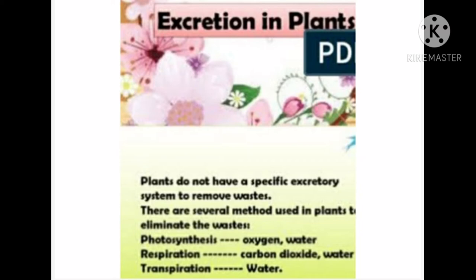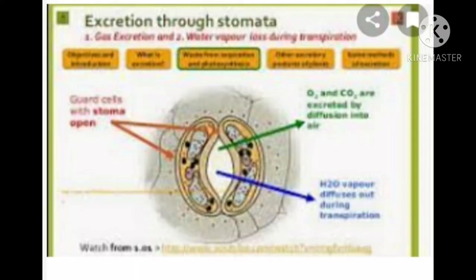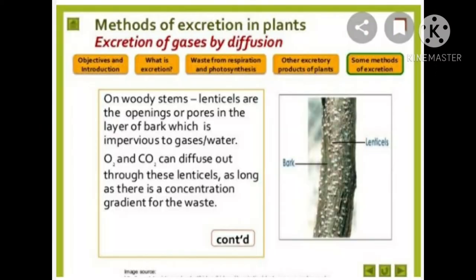During photosynthesis and respiration, carbon dioxide, oxygen, and water are produced as additional materials. When oxygen is in excess, it exits outside the cell through stomata of leaves and lenticels of stem. Here, diffusion involves gas exchange from higher concentration to lower concentration.